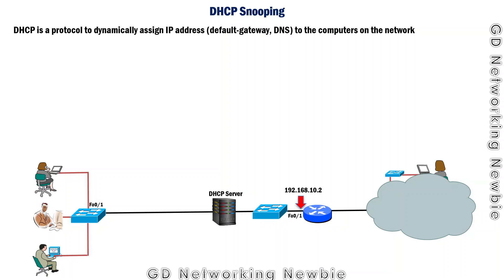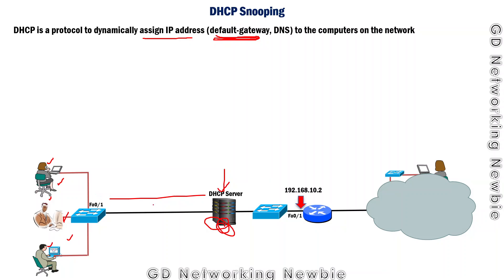This is based on the idea of DHCP. DHCP is a protocol that assigns IP addresses to clients dynamically. Instead of static configuration, we can configure a DHCP server in our network, and then the DHCP server can assign IP addresses to clients. In addition to the IP address, the DHCP server can also provide default gateway information. Default gateway means if you want to send information to some other network, you need the default gateway information.